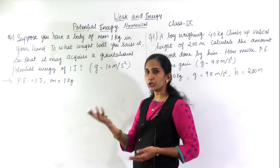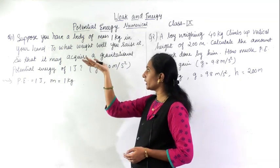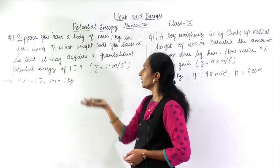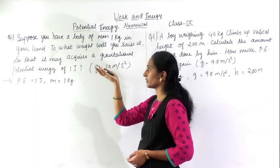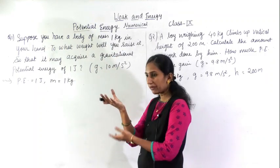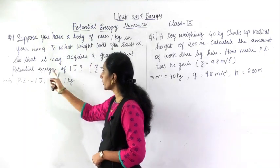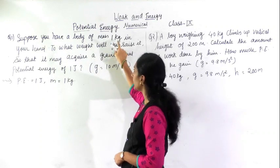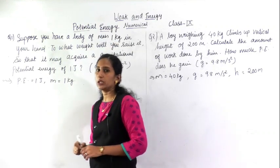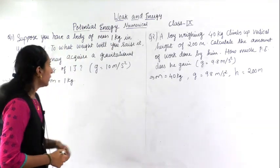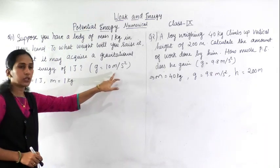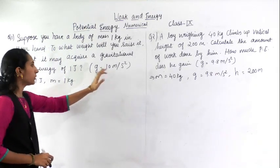You are having a weight of 1 kg in your hand. To what height can you raise it so that it will acquire a gravitational potential energy of 1 joule? What things are given? Potential energy is given 1 joule, then mass is given 1 kg. You have to find, and g is also given 10 meters per second square. You can use this g.